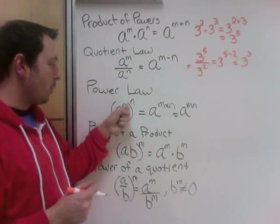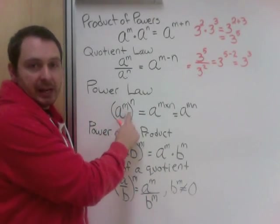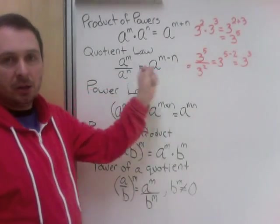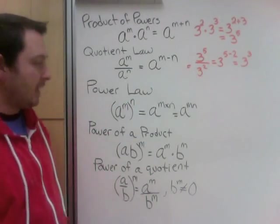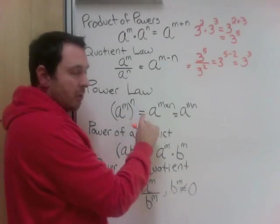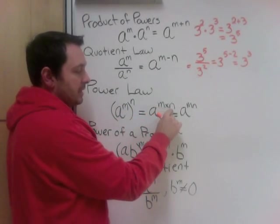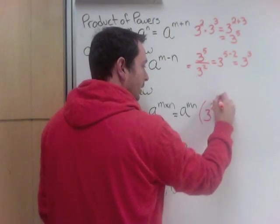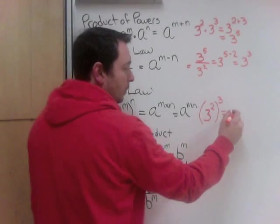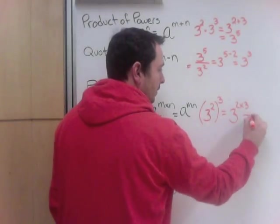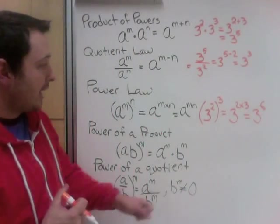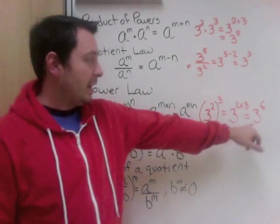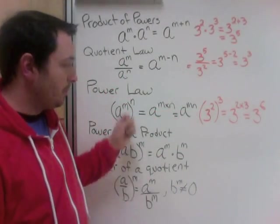Next, power law — power of a power means there's a power on a power. So A to the power of M raised to another power N: when you're powering powers, you multiply. So multiplying gives adding, dividing gives subtracting, and powers give multiplying. A to the M to the N becomes A to the M times N, simplified as A to the MN. An example: 3 squared cubed is a power of a power, so we multiply: 3 to the power of 6. If you want to check, 3 squared is 9, and 9 cubed is 729 — the same as 3 to the power of 6, because of the power law.